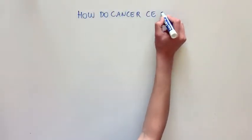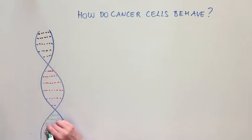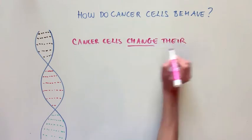To understand exactly how cancer cells behave, let's turn to the DNA sequence of cancer cells. Cancer cells acquire the ability to grow indefinitely due to changes in their DNA sequence, which we call mutations.